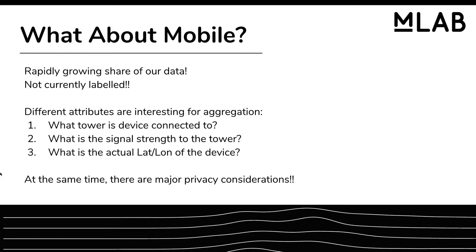At the same time, the things that are much more relevant from an environmental point of view for mobile measurement are really the lat/long of the client device, what towers are connected to, what the signal and noise ratio is. And as people move around, if we're not careful about how we identify the tests, we could make it fairly easy to track people, and we can't let that happen.